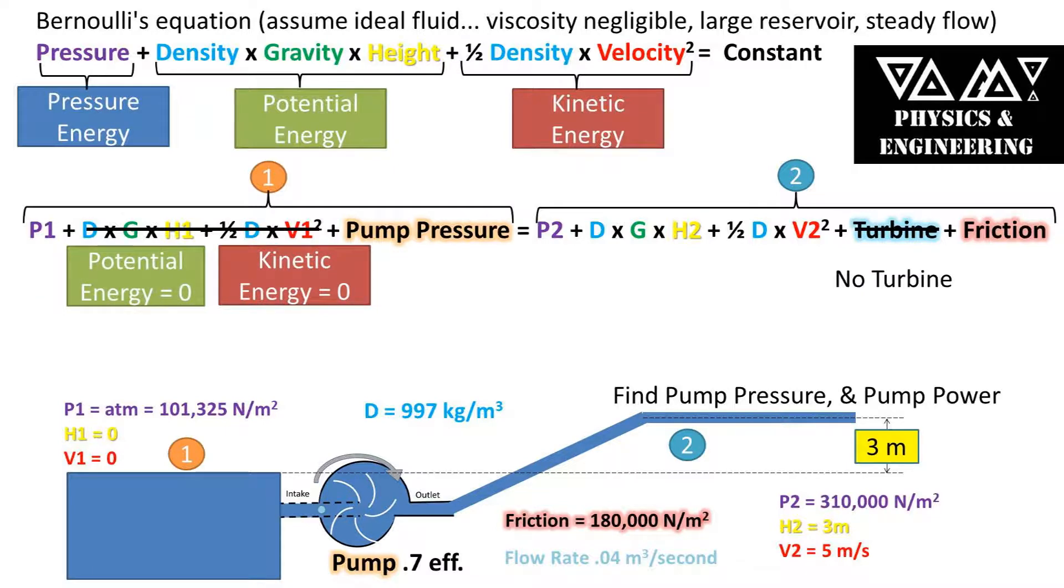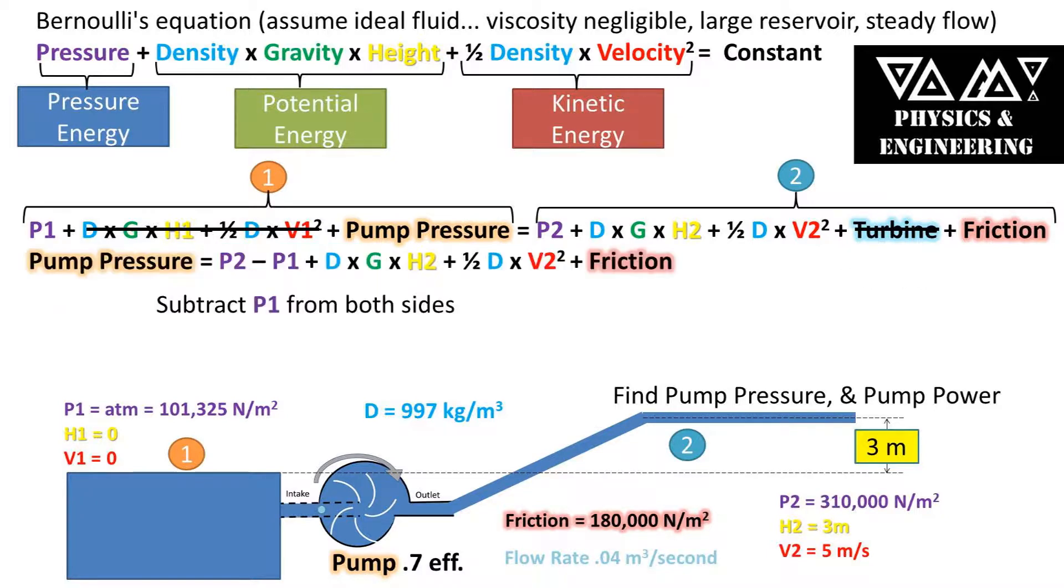There is no potential energy at point one being that the height is zero relatively speaking, and there is no kinetic energy at point one being that it is a large reservoir and there is virtually no movement at the surface. Also there is no turbine in this problem, so all of these values can be removed.